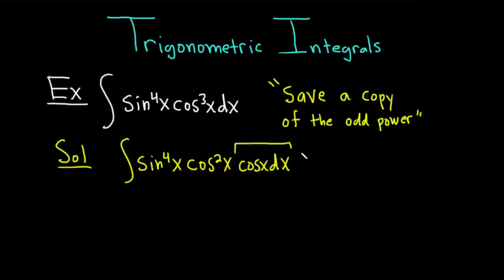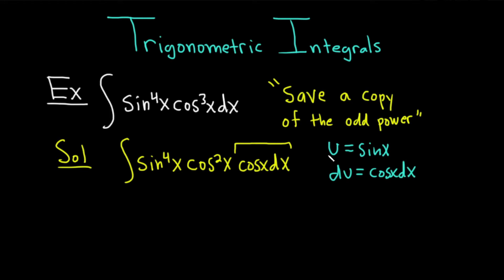Because we're saving a copy of cosine, u is going to be the other one — u is equal to sine x. Then du is the derivative, which is cosine x dx. Now, even though we've made the substitution, there's still a problem: if u is sine x, we'll have u to the fourth here, but we still have this cosine squared, which needs to be in terms of sine.